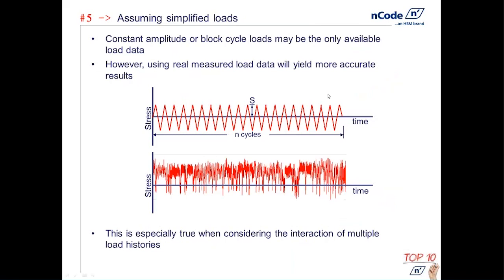The fifth common mistake is one where we assume simplified loads. It's completely understandable that you may only have simplified load meant to represent some real-life event. The simplified load could be in the form of a constant amplitude cycle, or a bit more sophisticated with block cycle loads — essentially a small count of different stress cycles, such as a group of large cycles followed by medium-sized cycles and then small cycles, as an attempt to better approximate real-life measurements.